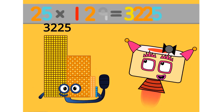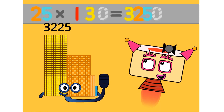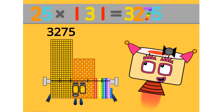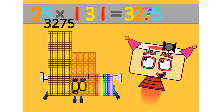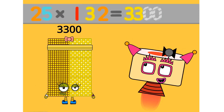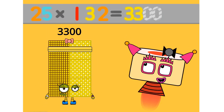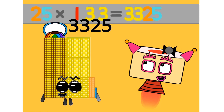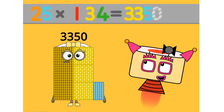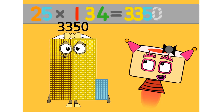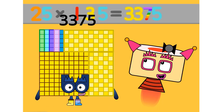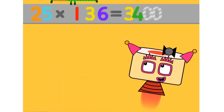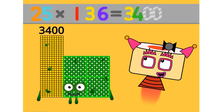25 times 129 equals 3250. 25 times 135 equals 3375. 25 times 136 equals 3400.